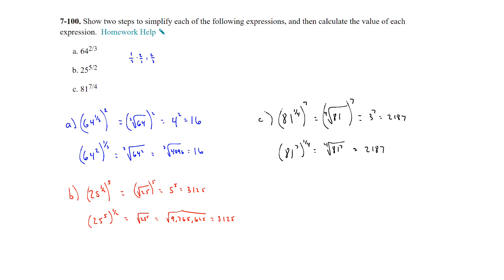Those are a couple of different ways to simplify fractional exponents. Notice that the first approach — taking the root first (cube root of 64, square root of 25, 4th root of 81) — is a little bit easier because the numbers stay smaller. But you can use your calculator to simplify either way.